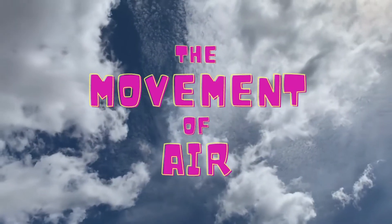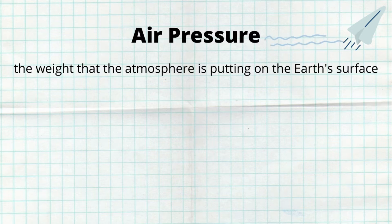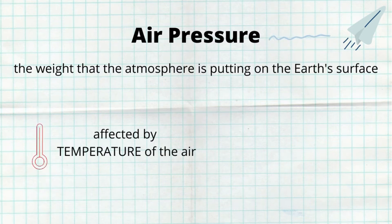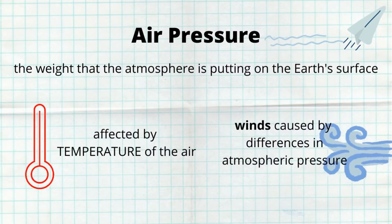In this video we'll be talking about the movement of air. To understand how air moves around our earth, we need to understand the differences in pressure that exist. When we talk about air pressure, we are talking about the weight that the atmosphere is putting on the earth's surface. Air pressure is affected by the temperature of the air, and wind is caused by differences in atmospheric pressure.